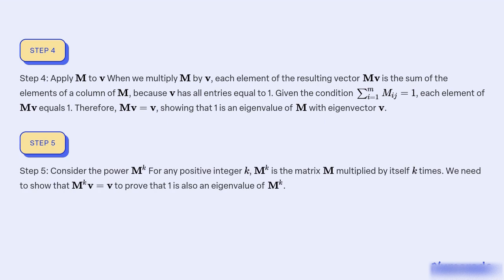Step 5: Consider the power M^k for any positive integer k. M^k is the matrix M multiplied by itself k times. We need to show that M^k v = v to prove that 1 is also an eigenvalue of M^k.